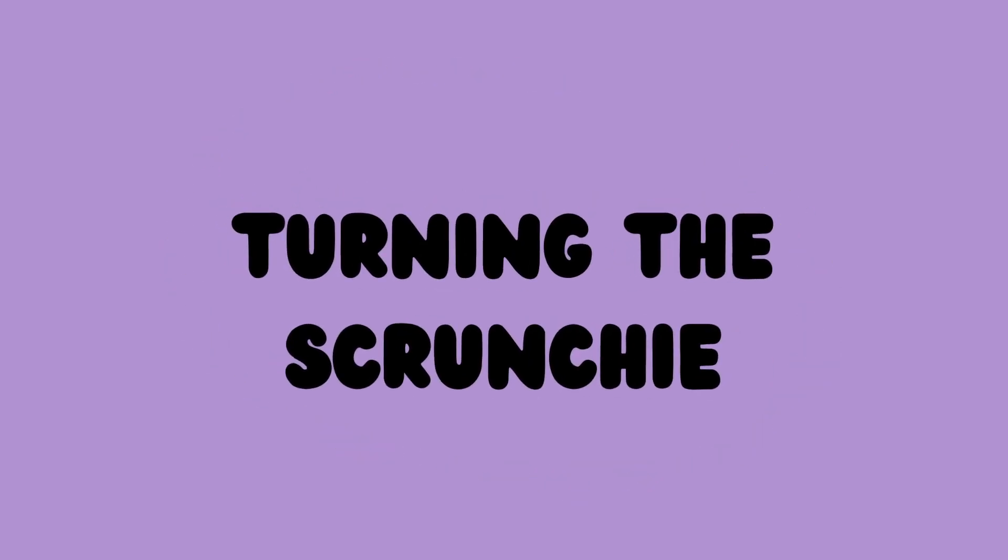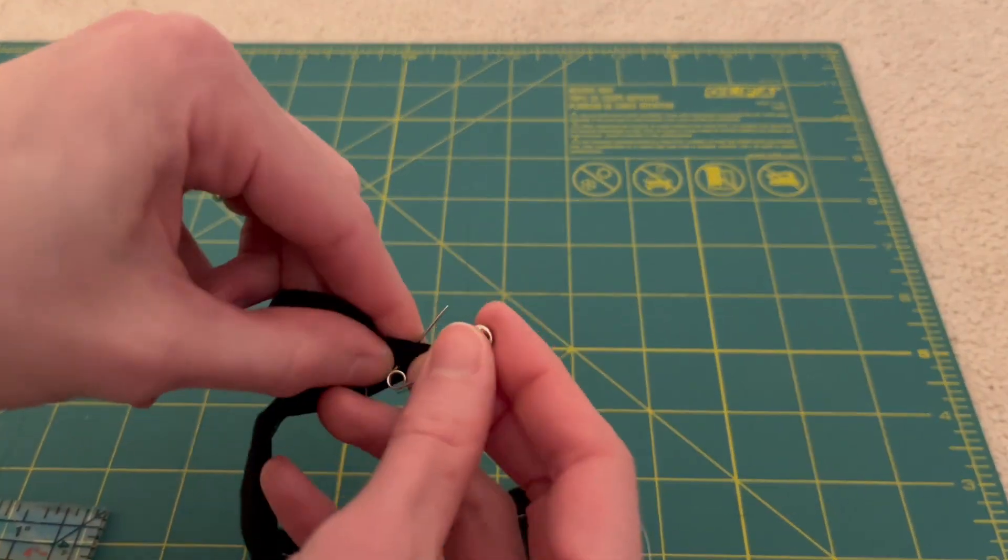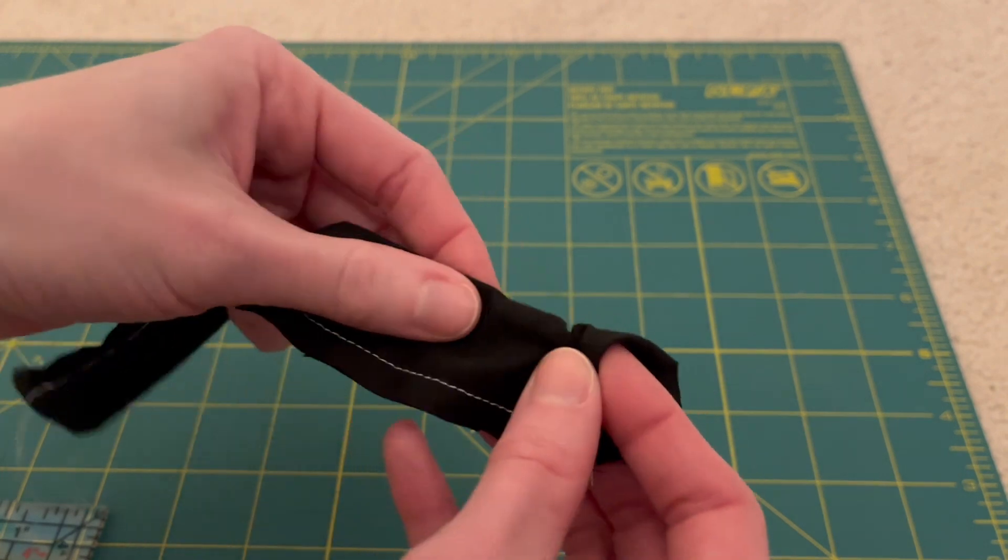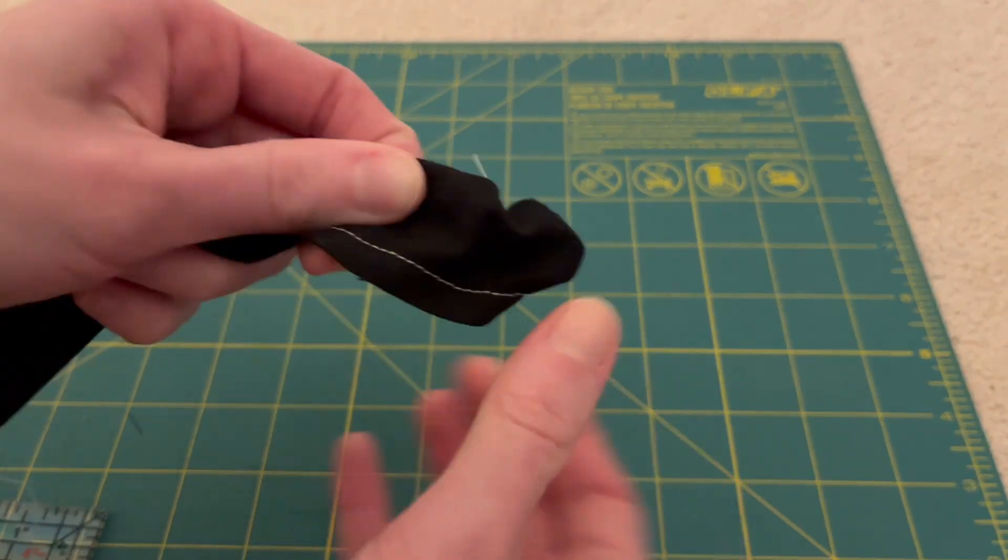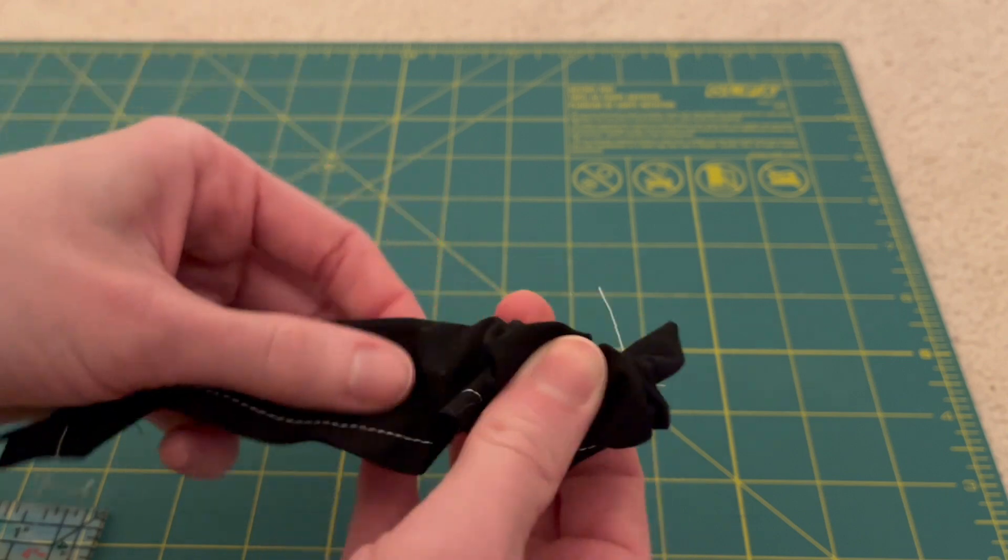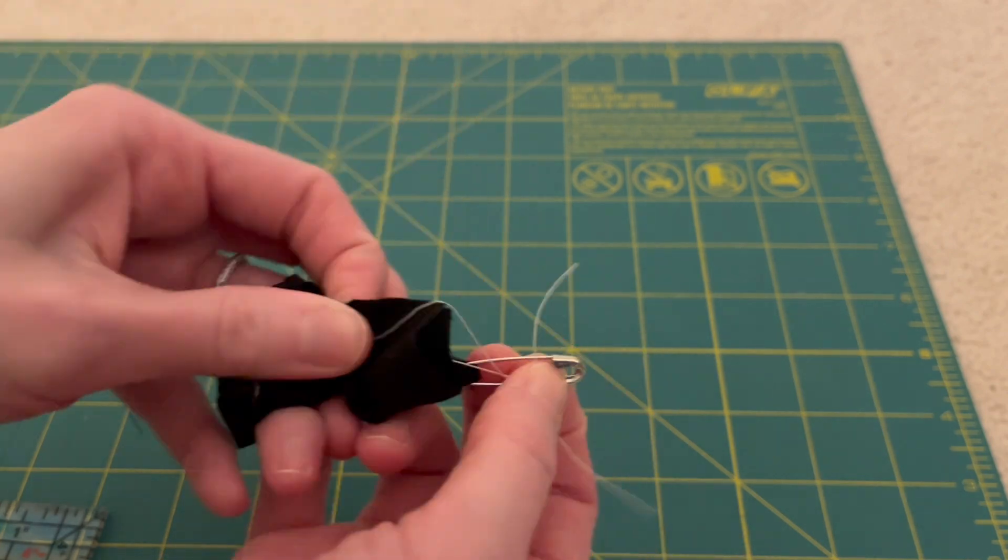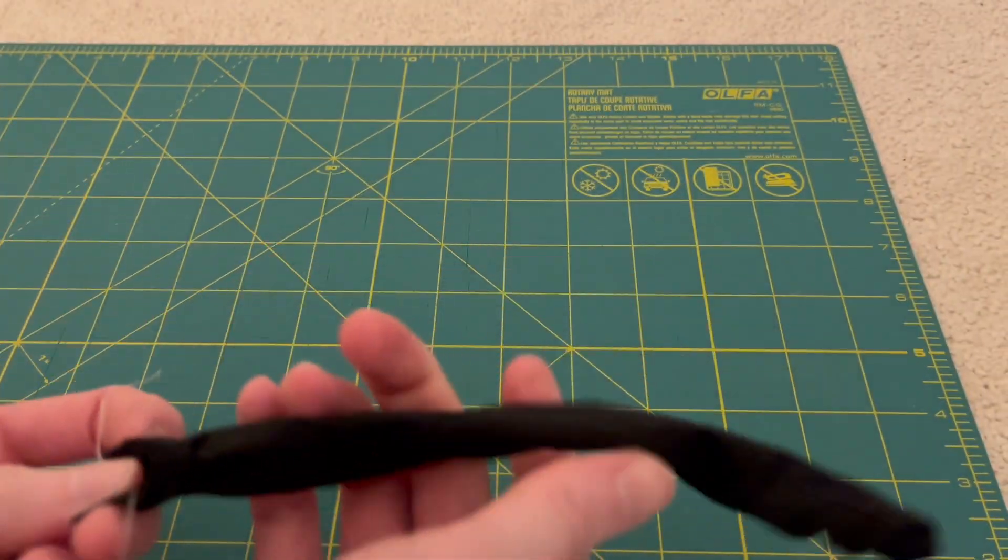Now let's say you finish that first seam and now it's time to turn the scrunchie. So this can actually be a little difficult especially if you do use a thinner scrunchie. So my biggest tip for this is to use a safety pin. So put your safety pin on one of the edges and then just push the safety pin through that scrunchie tube. You could also use a turning tool for this if you would like. I just find safety pins are a lot easier and I always have them on hand. The safety pin will then allow you to pull this through and you'll have a perfectly turned scrunchie.